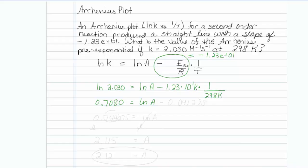well, negative 12.3 divided by 298 equals negative 0.041275. So I will bring this to the other side and get natural log of A is equal to plus 0.7080, which is 0.749275.